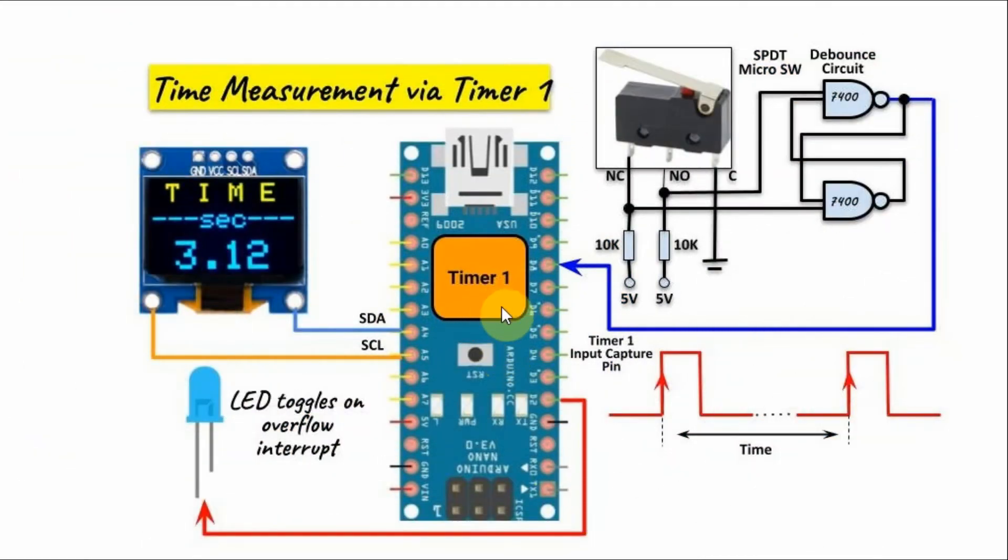Timer 1 is programmed to give both input capture interrupt and overflow interrupt. Input capture interrupt occurs whenever there is a rising edge pulse input to digital pin D8 of the Arduino. The objective is to measure the time between two consecutive rising edge pulses and the measured time is displayed on this OLED screen. The LED will toggle every time we have an overflow interrupt.